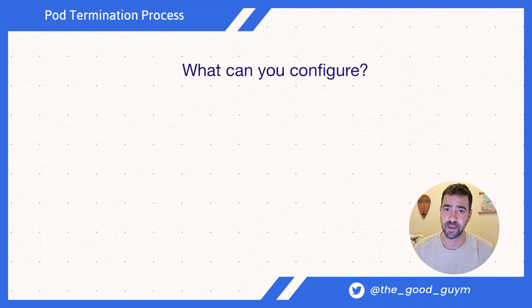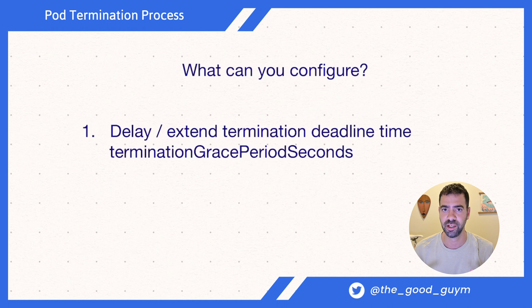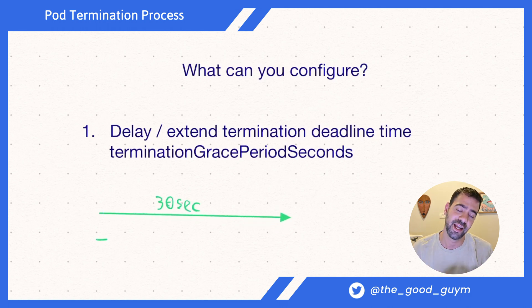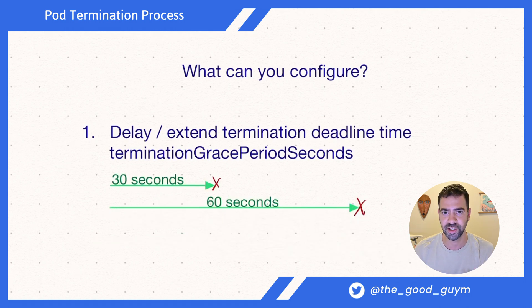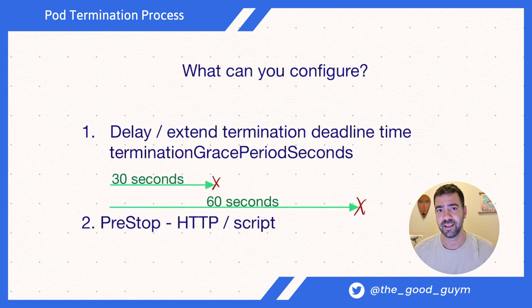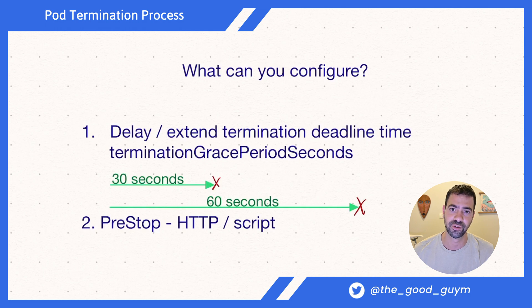There are some configurations you can use. First, you can delay the termination, because for some applications 30 seconds is not enough. You may want to extend it to 60 or maybe 90 seconds. This is more common for legacy applications, so I would not recommend it, but sometimes you need this configuration. The other thing is that you need to configure the pre-stop if you are using an HTTP request or a script in order to shut down your pod.